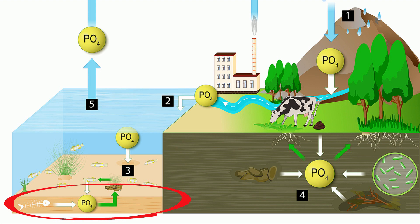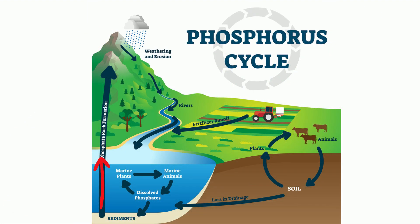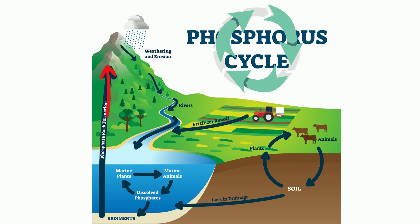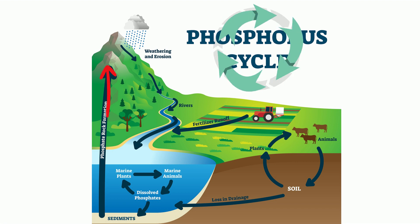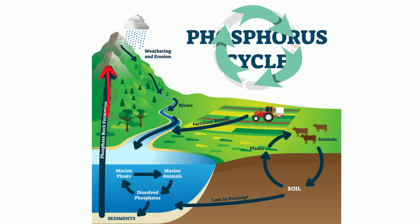Over long periods of time, phosphorus-containing sedimentary rock may be moved from the ocean to the land, and then the cycle repeats. However, this process is very slow.